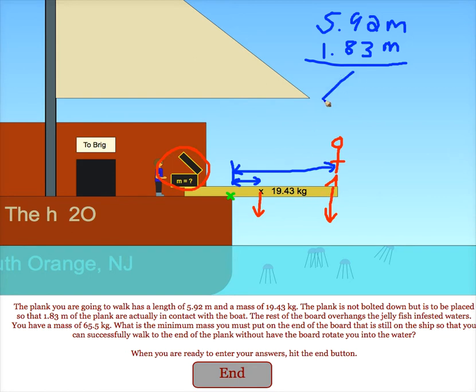Once we have that distance, we use it to find our torque from the person. That will be a clockwise torque. To get the distance to the center of mass, just take half the length of the board and subtract that from the length we had here.